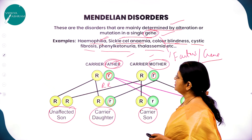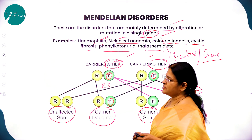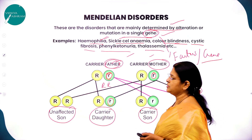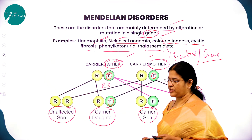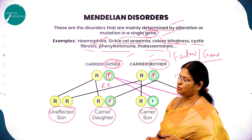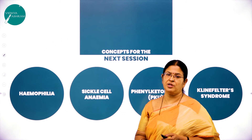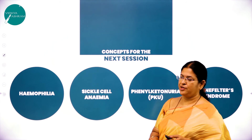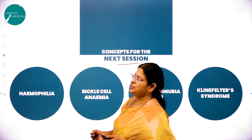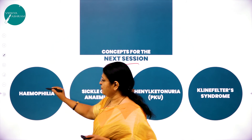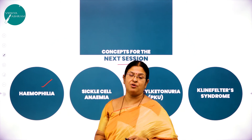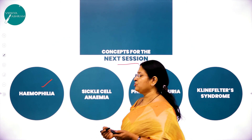To summarize today's session: we studied what is mutation, the types of mutation, and pedigree analysis — including analysis with autosomal dominant trait and autosomal recessive trait. In the next session, we will continue the last session of the chapter Principles of Inheritance and Variation, covering hemophilia in detail.